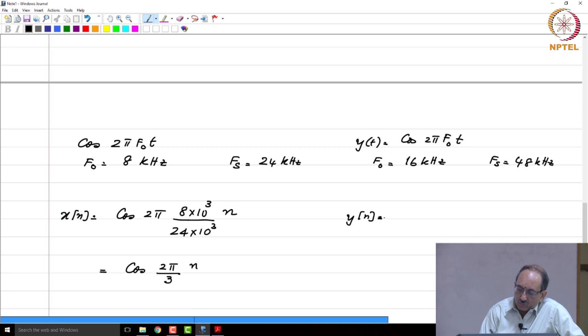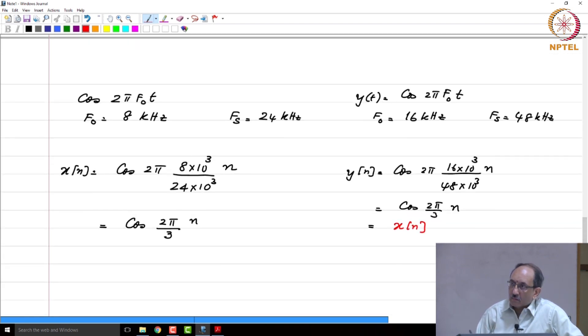And if you look at the corresponding y of n, so this after all is cos 2π 16 times 10³, you are going to replace t by n cap T, n times cap T is 1 over f_s and this is 48 times 10³.